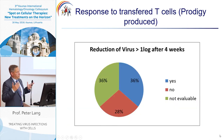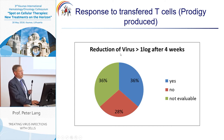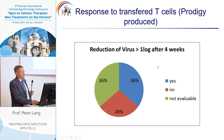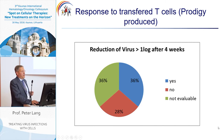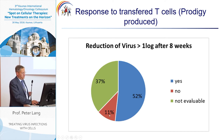What is the response to the Prodigy-produced transferred T cells? Response was defined as a reduction of virus load by at least one log after four weeks. At four weeks, we could see a response in 36 percent of patients, while in 28 percent nothing happened. After eight weeks, we had a response in 52 percent of patients, whereas 11 percent remained without response.